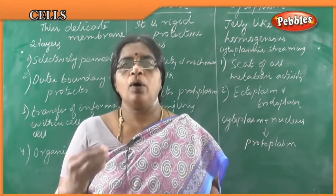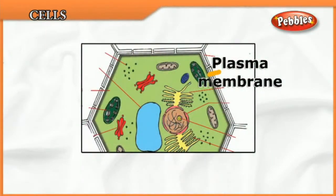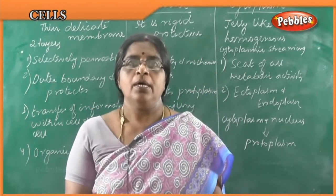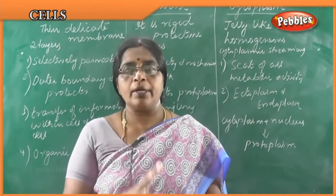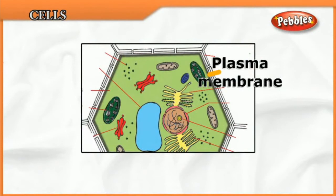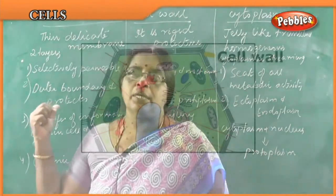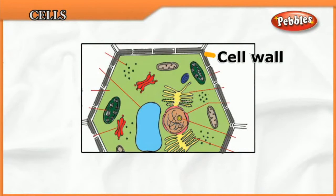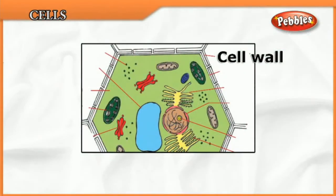Cytoplasm is a jelly-like, homogeneous and translucent substance — translucent meaning it allows light to pass through it (unlike opaque substances which do not allow light through). Cytoplasm contains all the cell organelles and is always moving along with them; this movement is called cytoplasmic streaming. The main function of cytoplasm is that it is the main site for metabolic activity.